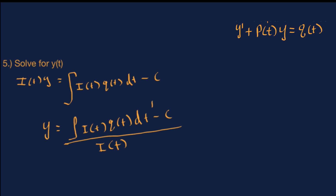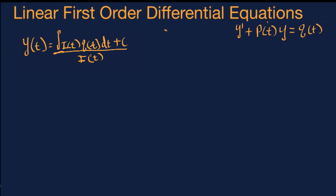Saying plus negative c is the same thing as saying minus c. And because c is an unknown constant, minus c is also an unknown constant, which we can still call c. So we're saying c equals minus c, and because of that we can change the sign from minus to plus without affecting the final solution. Now we have our formula for the general solution.